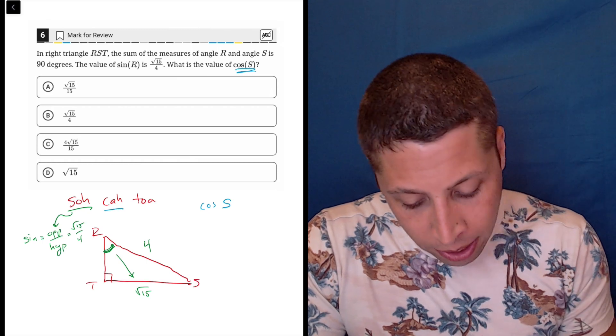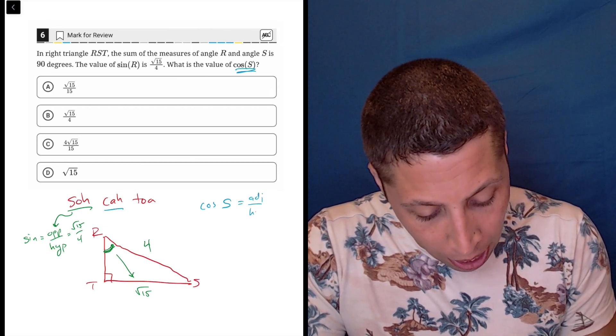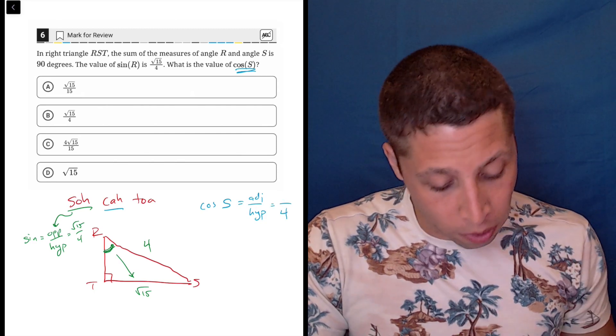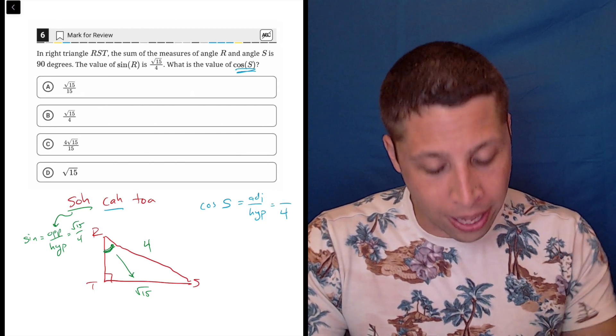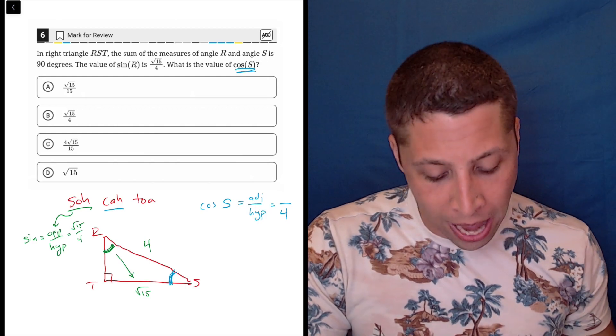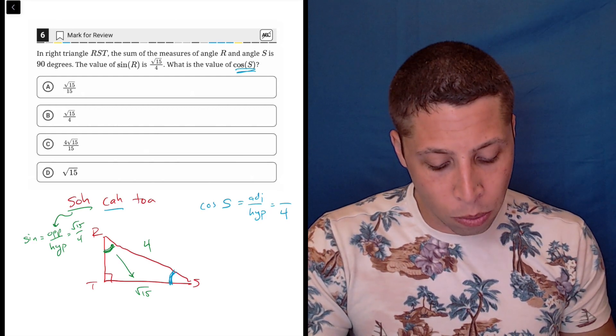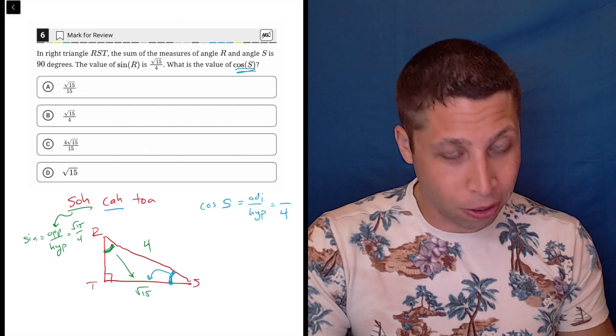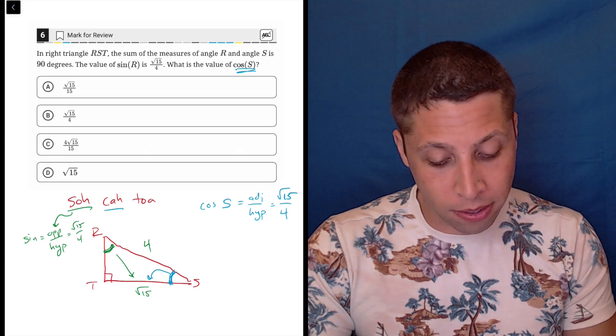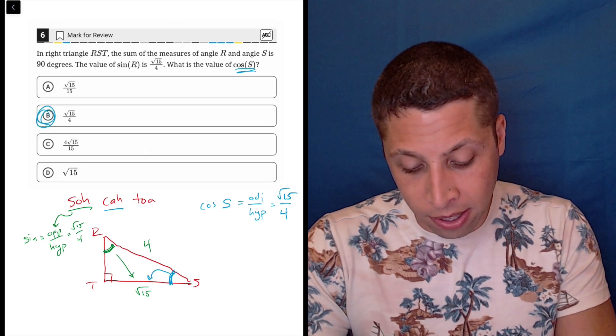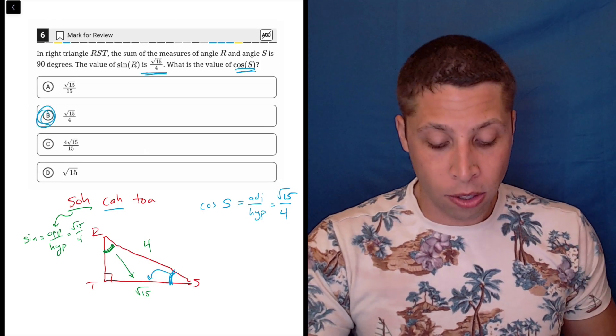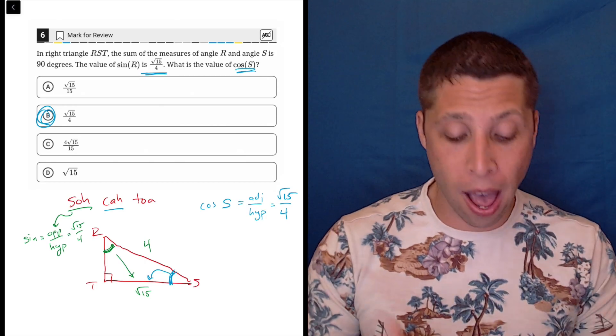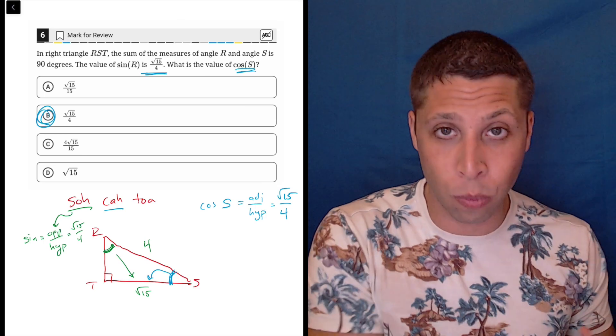Remember, cosine is adjacent over hypotenuse. So the hypotenuse is still 4. That's not going to change. And look, they changed the angle here. They moved us down to the S, which is here. So the adjacent is still the radical 15. So this freaks people out because the answer to the question is the same as what we started with. So they think they did something wrong, but no. And this might be why you take this longer path and draw the triangles out so that you can actually just see why this works.